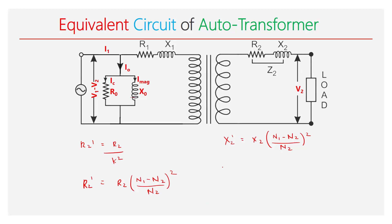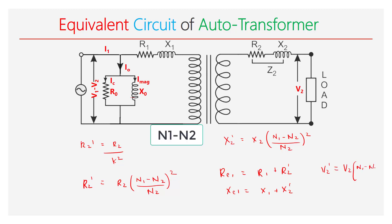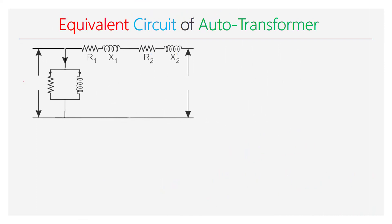After shifting, the equivalent resistance referred to the primary RE1 is given by RE1 equals R1 plus R2'. Similarly, XE1 equals X1 plus X2'. When V2 is shifted to the primary side, V2' is given by V2 multiplied by the number of turns on the primary side divided by the number of turns on the secondary side. The voltage applied across the winding is V1 minus V2, and V2 is written as V2'.